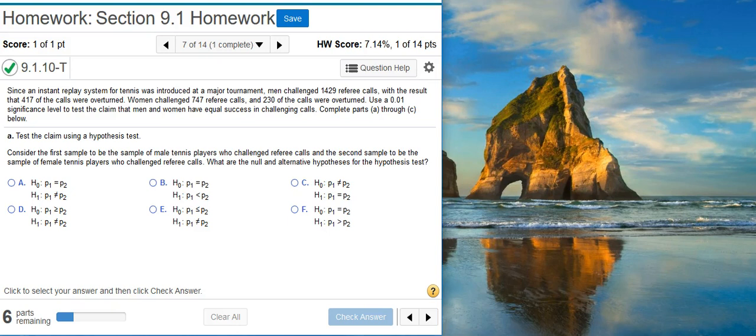Part A says test the claim using a hypothesis test, and the first part asks us to determine the null and alternative hypotheses. To do this we need to consider the claim that's being made from the problem statement. The claim is that men and women have equal success in challenging calls.